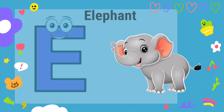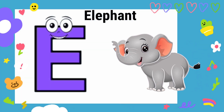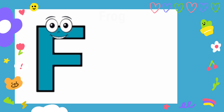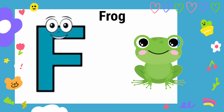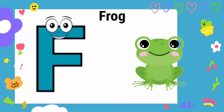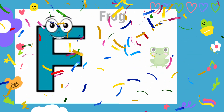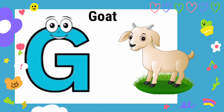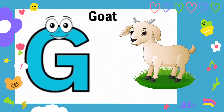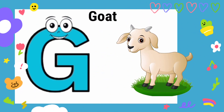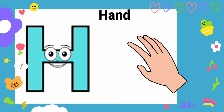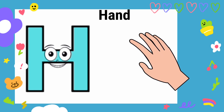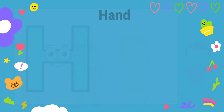E is for Elephant, E-E-Elephant. F is for Frog, F-F-Frog. G is for Goat, G-G-Goat. H is for Hand, H-H-Hand.